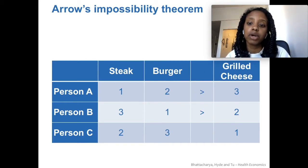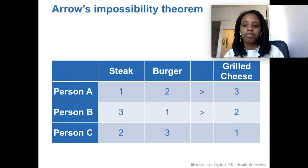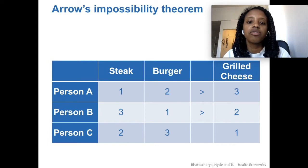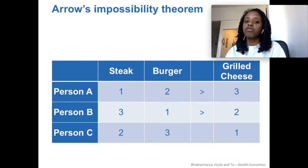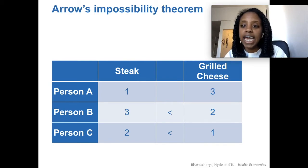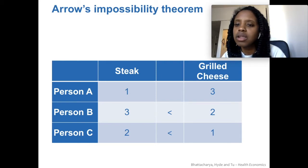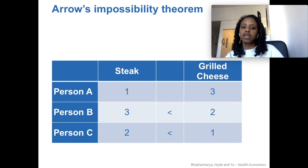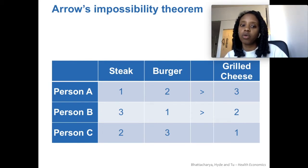Next we compare between the burger and the grilled cheese. Person A prefers burger to grilled cheese, and person B also does, so most people prefer burger to grilled cheese. So if you prefer steak to a burger and a burger to a grilled cheese, you would assume that most people would also prefer steak over grilled cheese. But when you compare just those two, most people actually prefer grilled cheese over steak. That shouldn't ever happen for an individual — if you like A better than B and B better than C, then you definitely prefer A to C. But when you're looking across a group of people, that's not always the case.